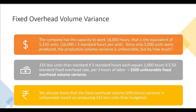The 16,000-hour relevant range is equivalent to 5,333 units (16,000 hours ÷ 3 standard hours per unit). But since only 5,000 units were produced, the production volume variance is unfavorable. Those 333 fewer units times 3 standard hours each equals 1,000 hours. 1,000 hours times $0.50 (the standard fixed overhead rate per 3 hours of labor) equals $500 unfavorable fixed overhead volume variance.